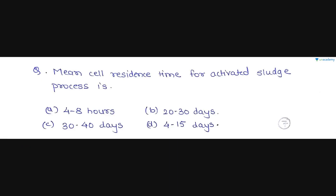The next question is: mean cell residence time for the activated sludge process is? Option A is 4 to 8 hours, Option B is 20 to 30 days, Option C is 30 to 40 days, and Option D is 4 to 15 days. The sludge age or mean cell residence time is denoted as theta C. It is defined as the average time for which particles of suspended solids remain under aeration. The theta C value — mean cell residence time — is 4 to 15 days. So option D is the correct option.